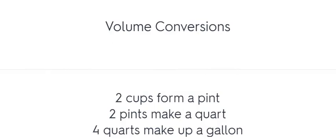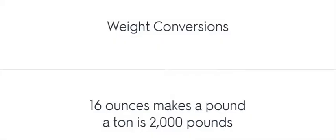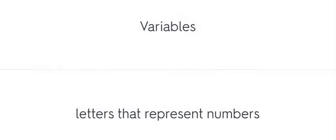Volume conversions. Two cups form a pint. Two pints make a quart. Four quarts make up a gallon. Weight conversions. 16 ounces make a pound. A ton is 2,000 pounds.